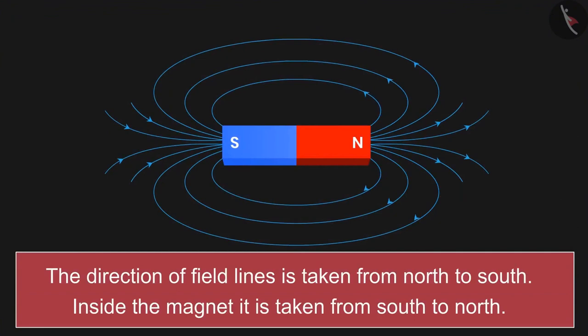According to the convention, the direction of field lines is taken from the north to south. Inside the magnet, it is taken from south to north.